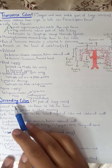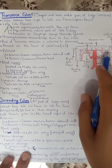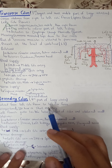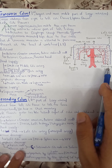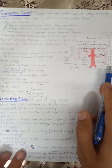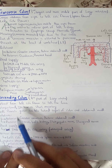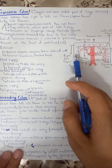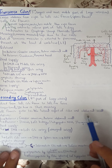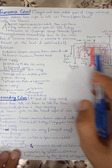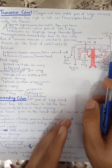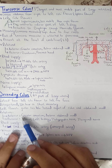The descending colon is the fourth part of the large intestine. It extends from the left colic flexure to the left iliac fossa. It is retroperitoneal, though in 33% of cases it may have a small mesentery — similar to ascending colon's 25%. The left paracolic gutter lies between the lateral aspect of the colon and the abdominal wall, connecting to the supracolic region. Anteriorly are the small intestine and greater omentum.